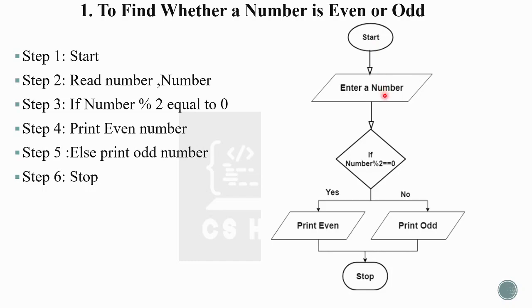In the flowchart: Start, then input the number — that's the input symbol, a parallelogram. Then check if number percentage 2 is equal to 0. If yes, we print 'even'. If no, we print 'odd', then stop. So it is a simple program.